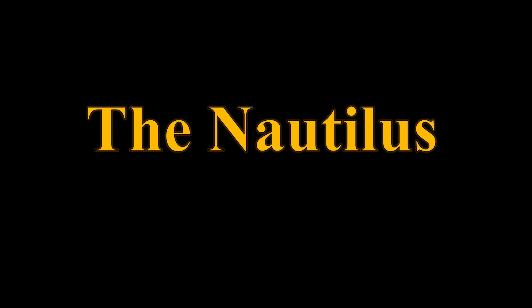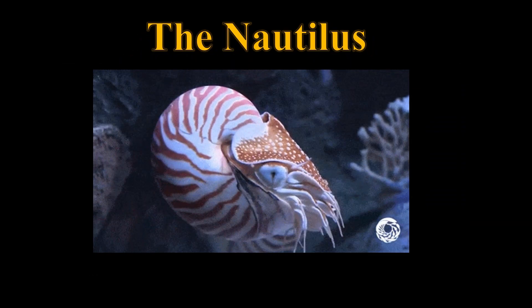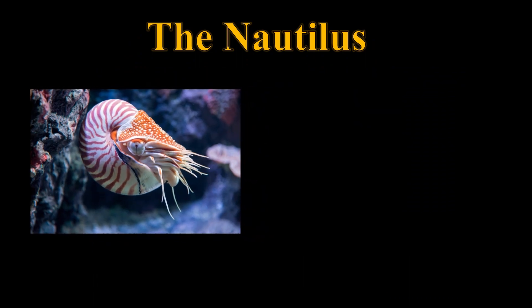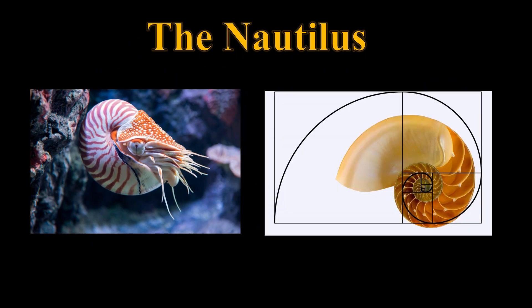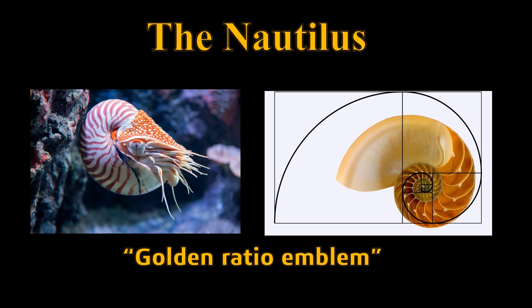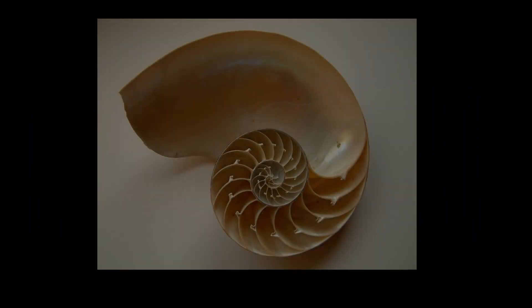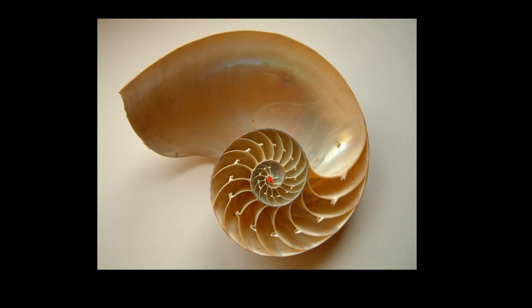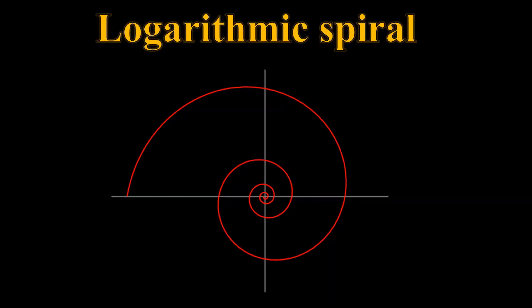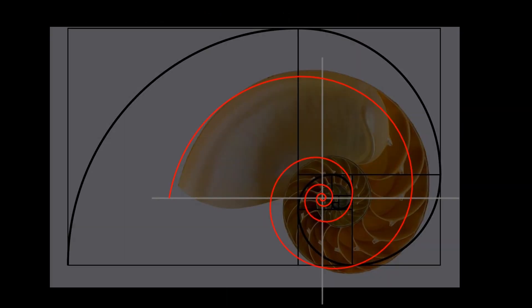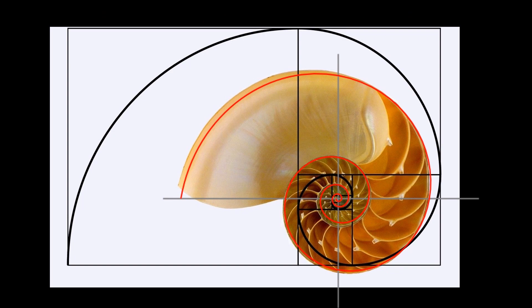The most popular example about the golden ratio is the Nautilus shell. For some reason, everyone thinks the shell of this creature represents a Fibonacci spiral. Yet again, this is false — because unlike the Fibonacci spiral, the shell of the Nautilus grows uniformly, which is also known as a logarithmic spiral. If you would actually superpose this on the actual shell, you will see that the logarithmic spiral fits this creature far better than the Fibonacci spiral.